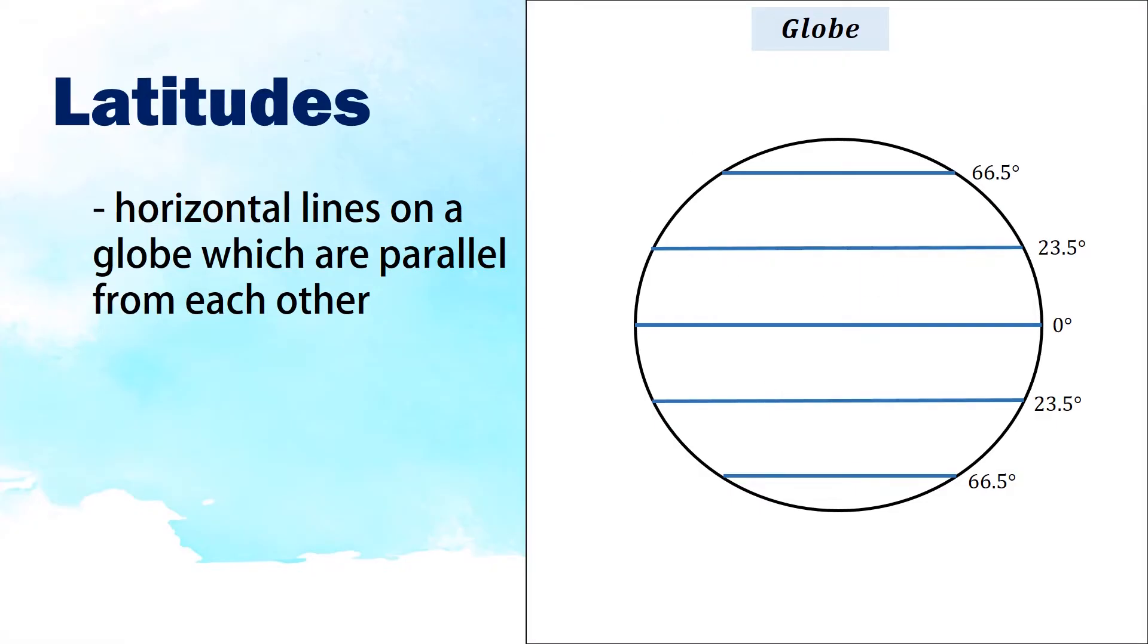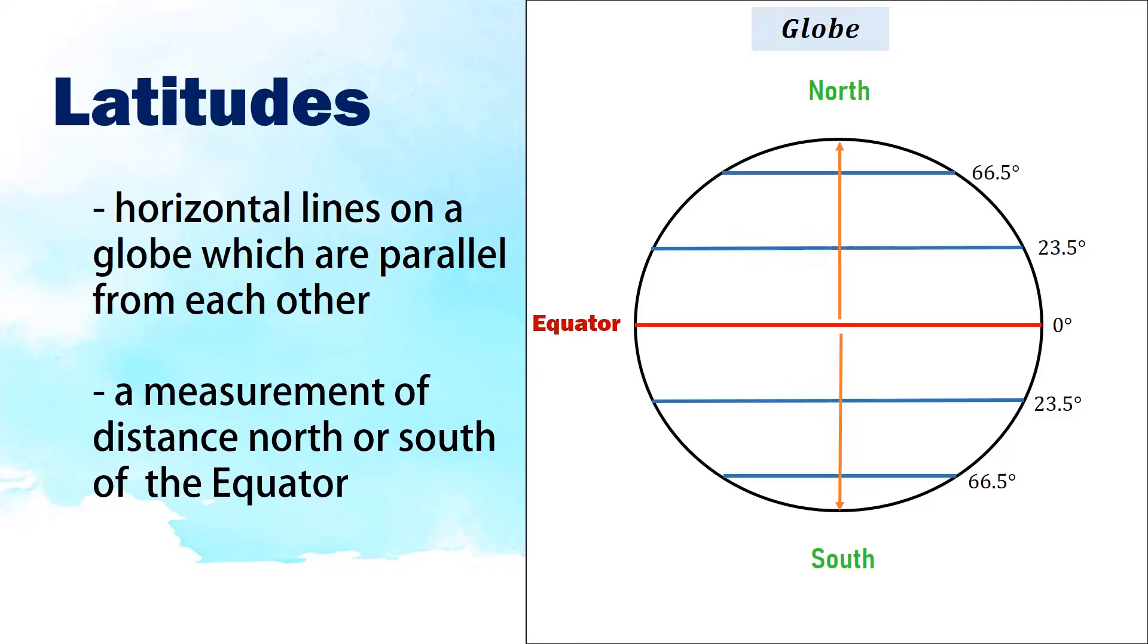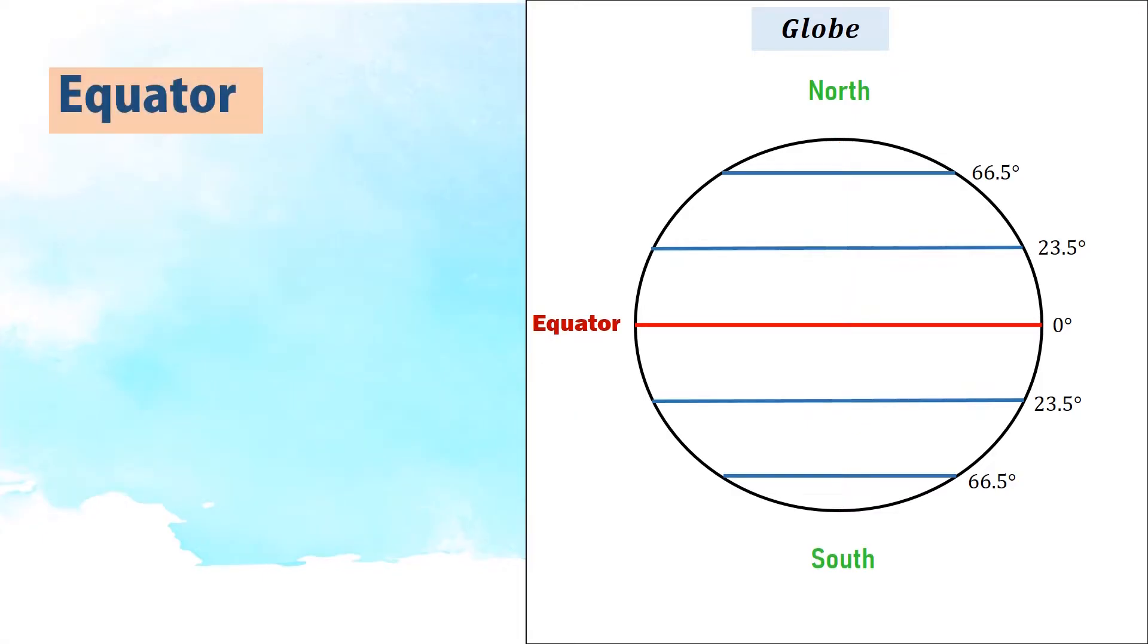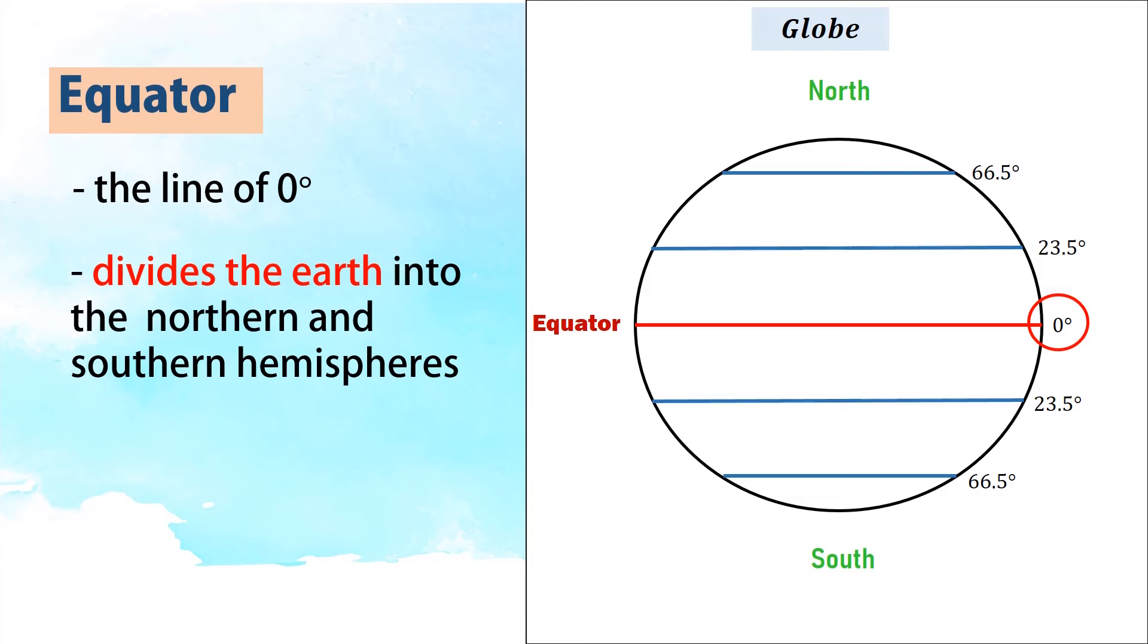Latitudes are a measurement of distance north or south of the equator. The equator is the center of the globe. The equator is the line of zero degrees that divides the Earth into the northern and southern hemispheres.